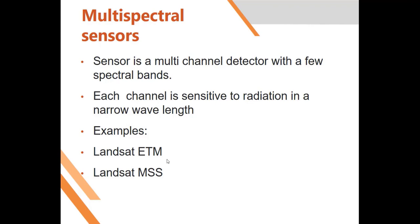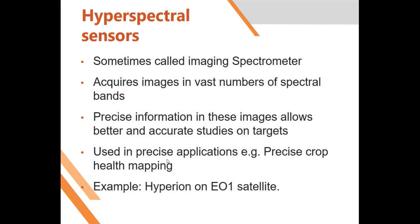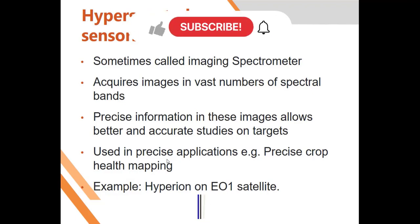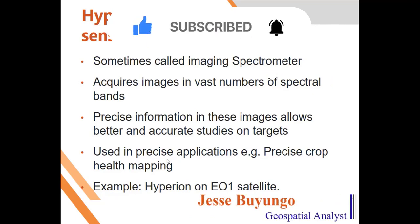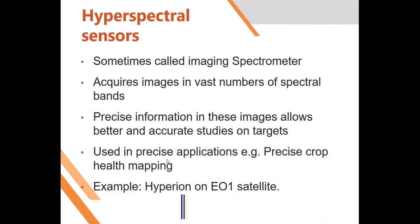We can also have multispectral sensors — these are sensors which have a few more bands. They don't have a lot of bands but they have more than a few. For example, Landsat ETM or Landsat MSS: the number of bands they have is not small but not very many. Each band is specific to a given wavelength — for example, blue, green, red, near infrared, mid infrared, etc. Hyperspectral sensors, on the other hand, acquire images in many different bands — even up to a hundred or more — and are used in precise applications like crop growth mapping and precise land cover mapping.